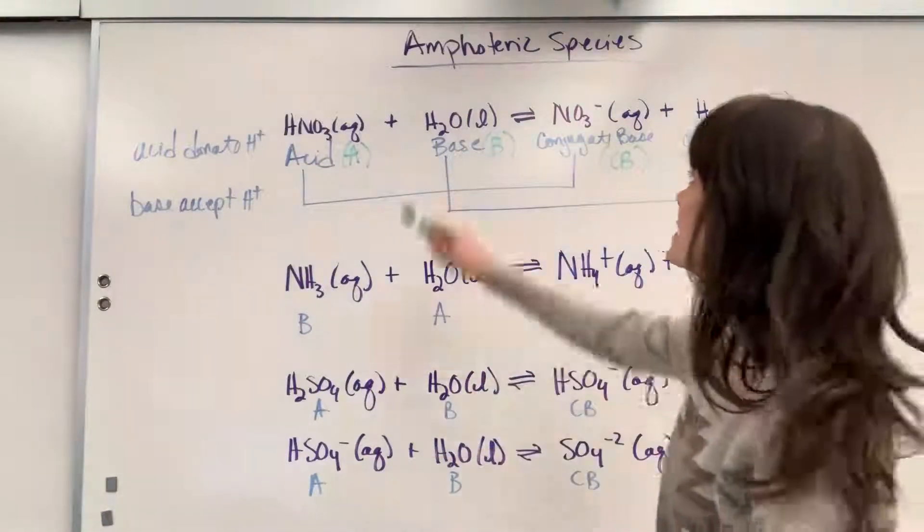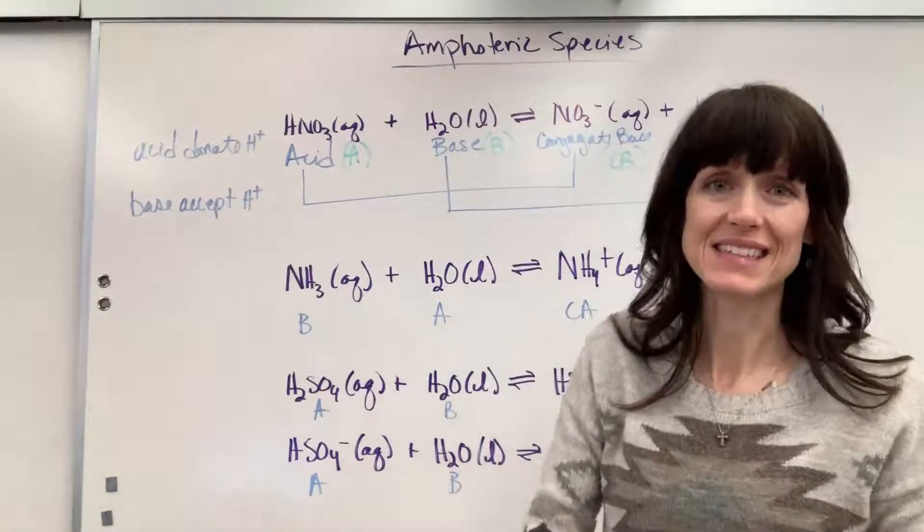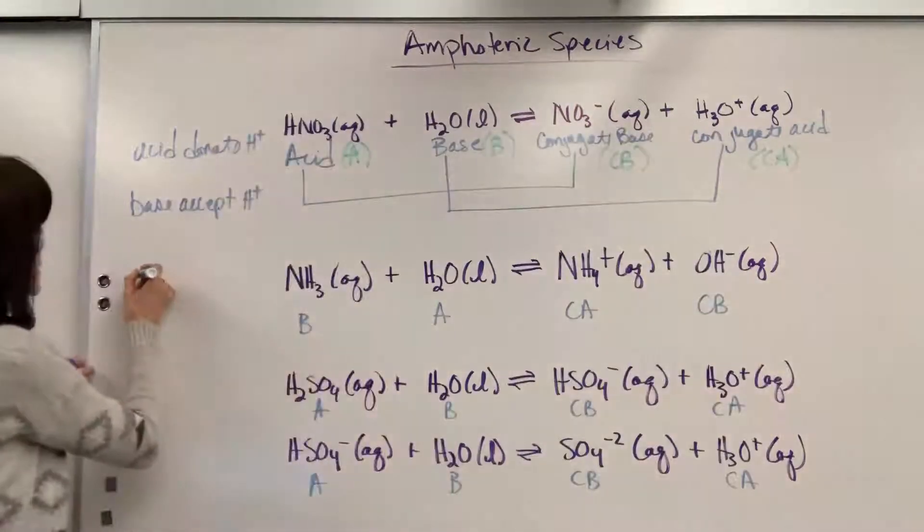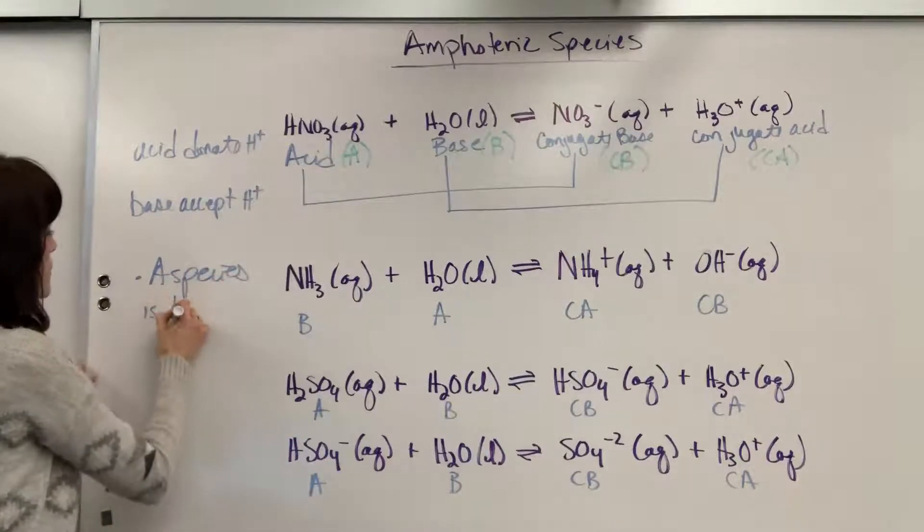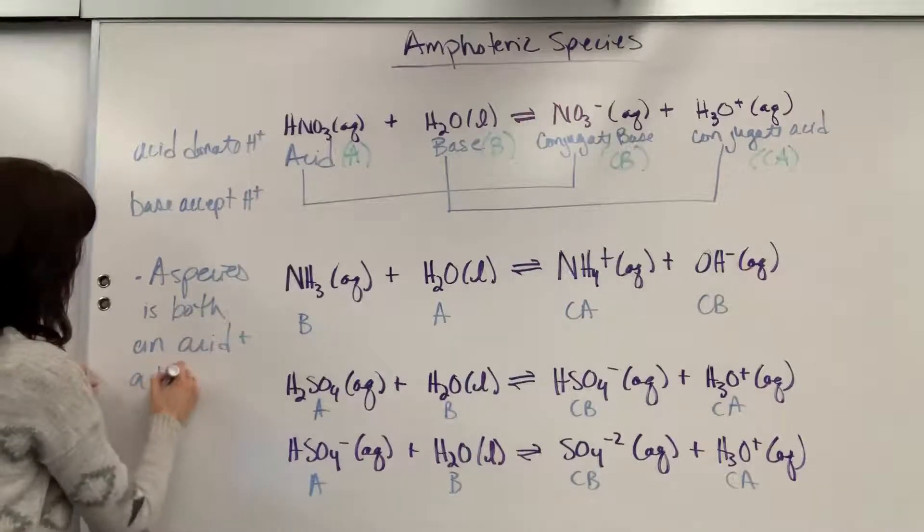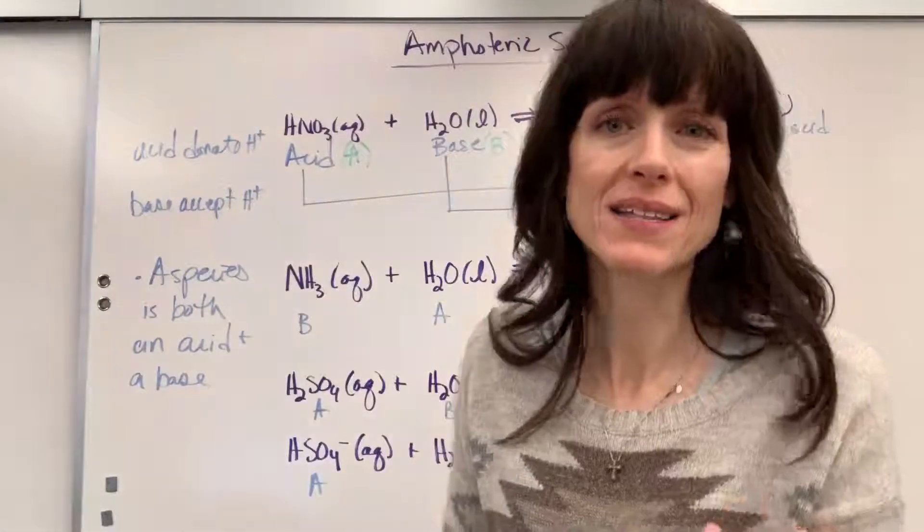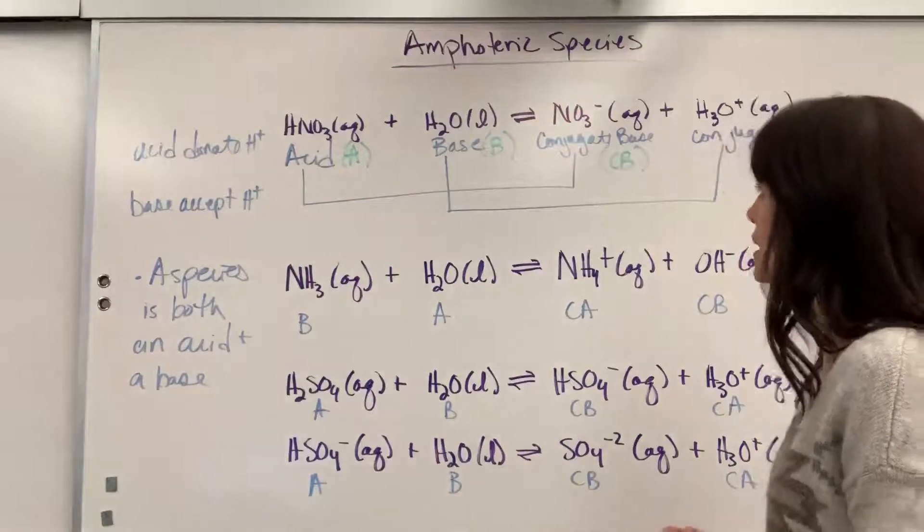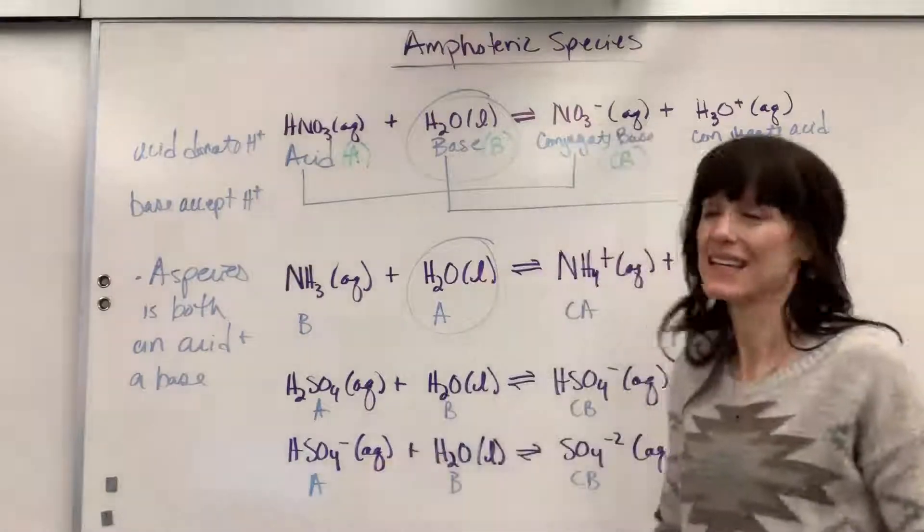Water is amphoteric. What do you think that means? It's both an acid and a base. So let's write that down. Amphoteric simply means a species is both an acid and a base. And I could say it acts as both an acid or a base. It depends on what it's with. So those two right there, there's your acid, there's your base, same species, it's amphoteric.